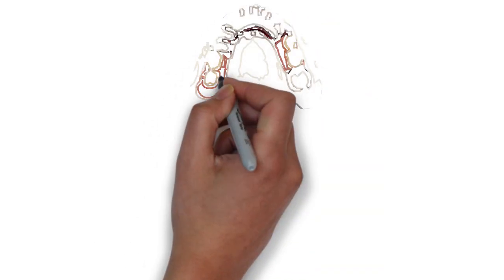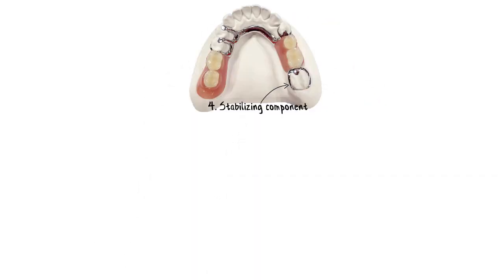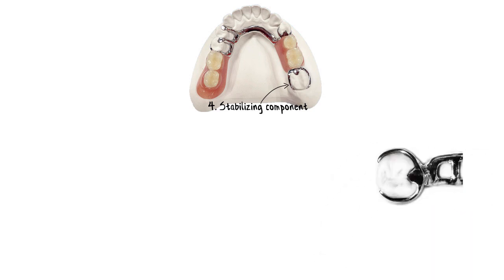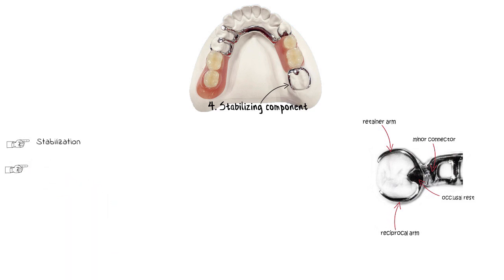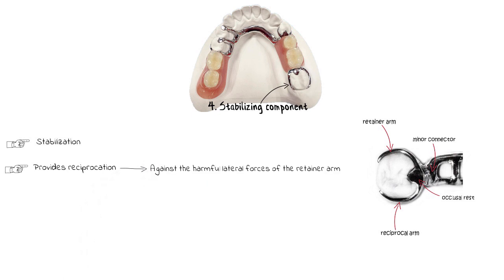The next part is the stabilizing component, also known as the reciprocal component. As the name indicates, these are present to stabilize the prosthesis and help the retainer arm. The reciprocating component provides reciprocation and counteracts the lateral forces that the retentive arm applies to the abutment tooth.